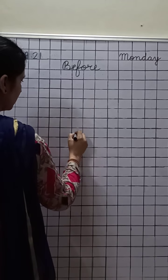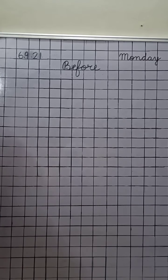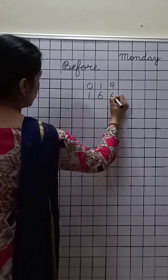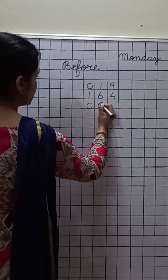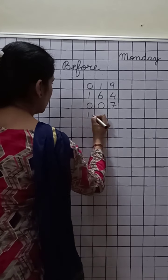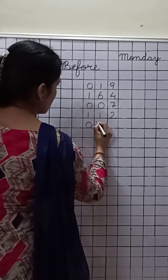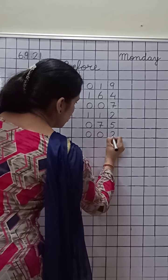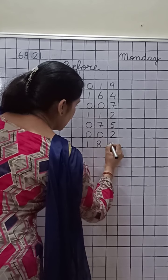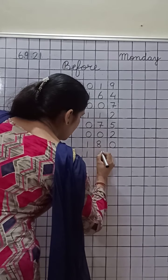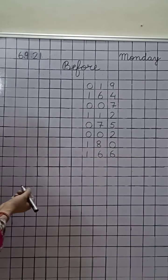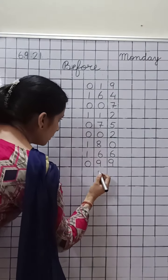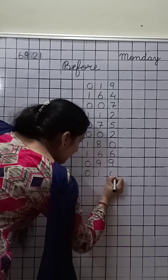Now leave this line. Write down here: nineteen, one hundred sixty four, only seven, one hundred, twelve, seventy five, only two, one hundred, eighty, one hundred, sixty six, ninety nine. Then write down ten.